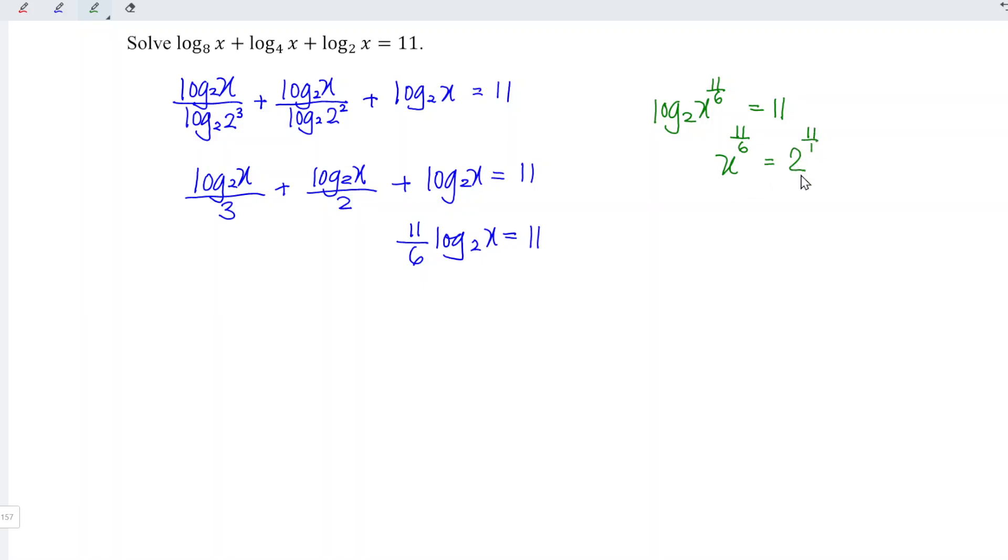By comparing the left and right hand sides, we have x to the power of 1/6 equals 2. In other words, x equals 2 to the power of 6, which means we have 64, and hence we're done.